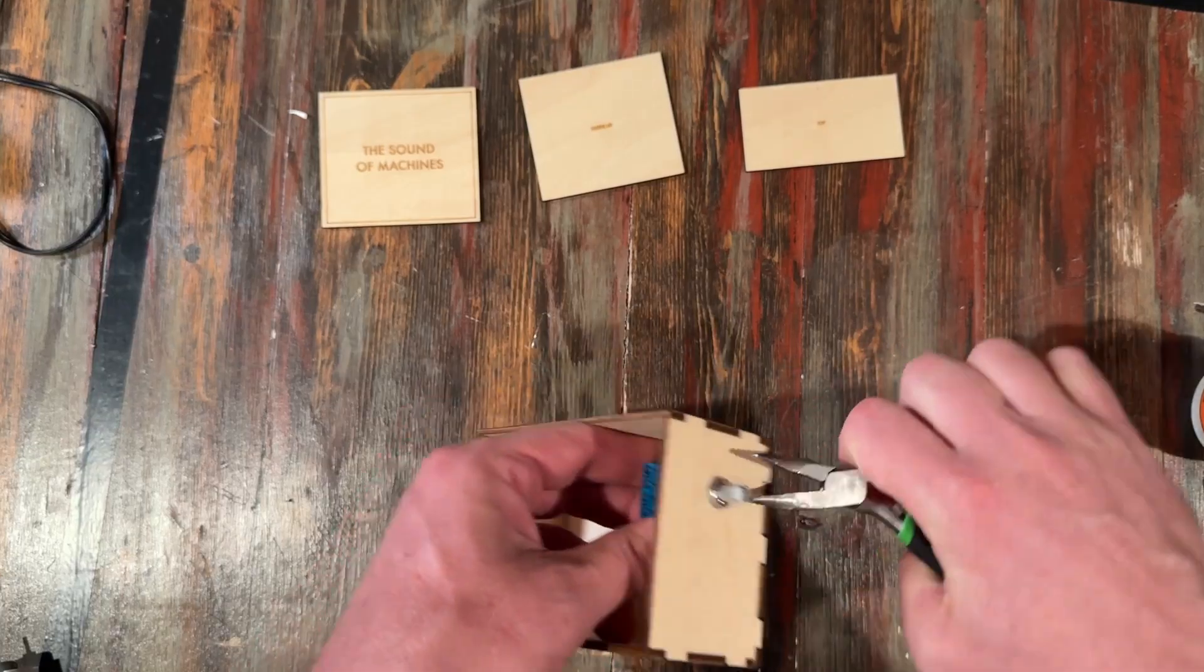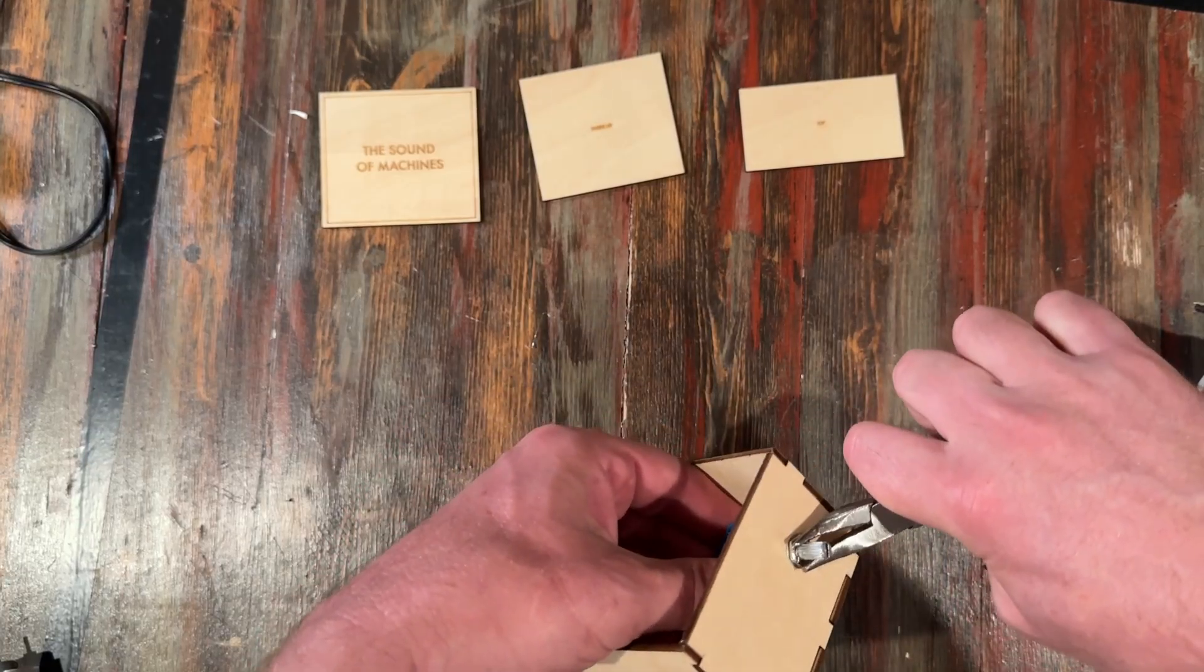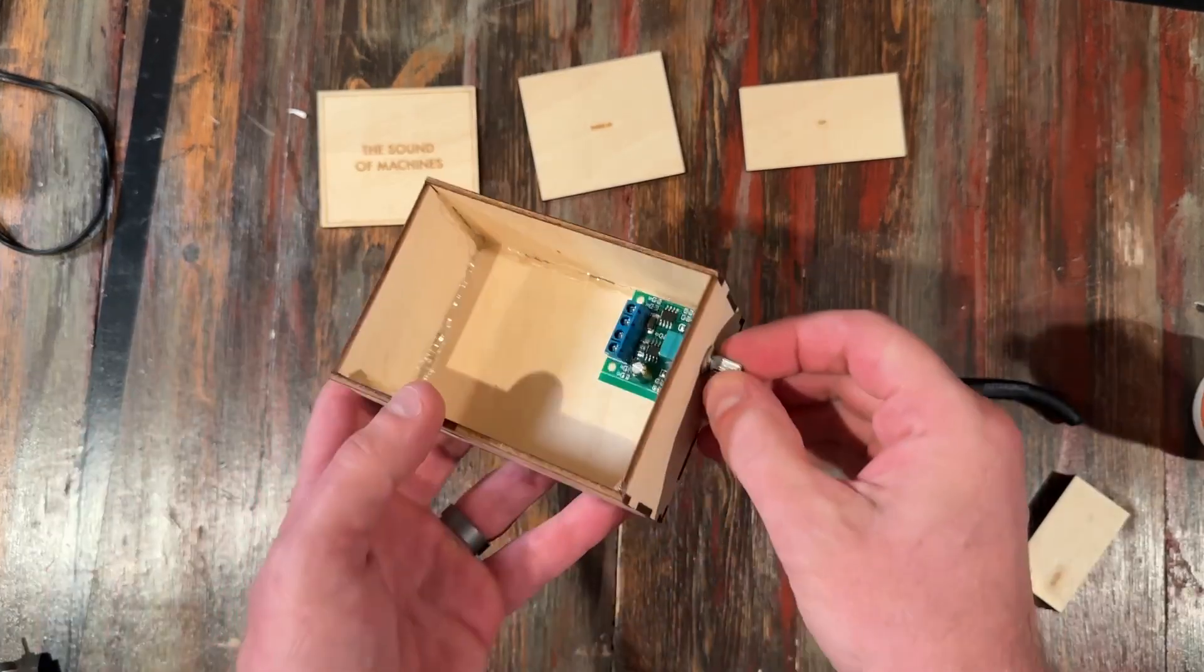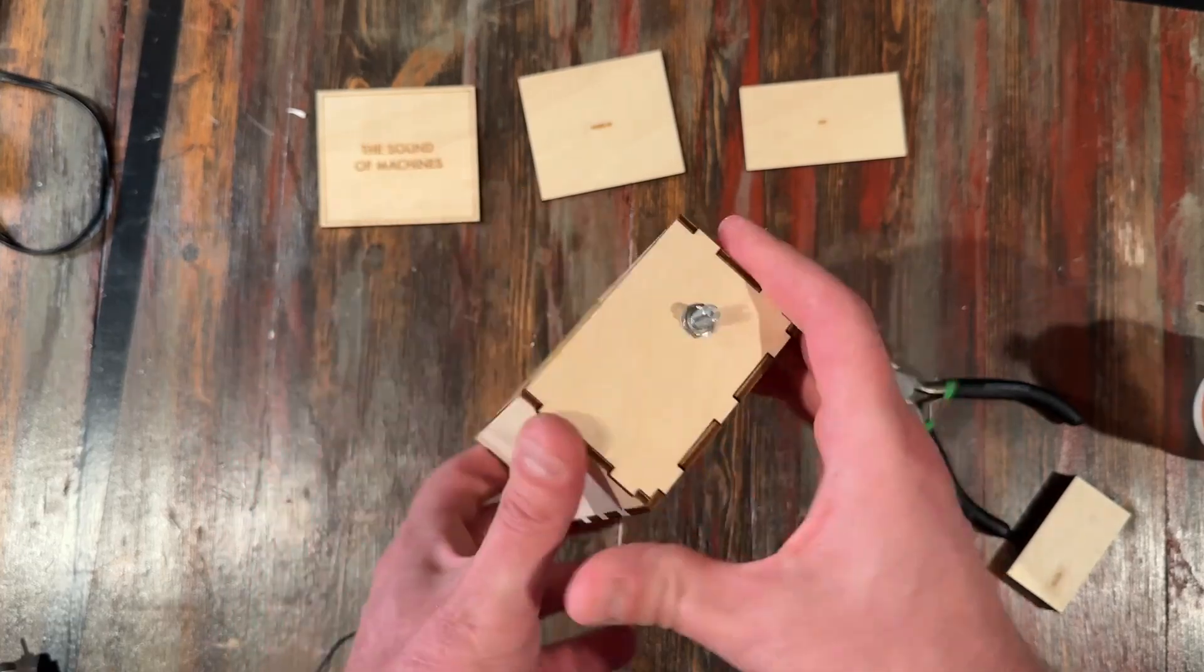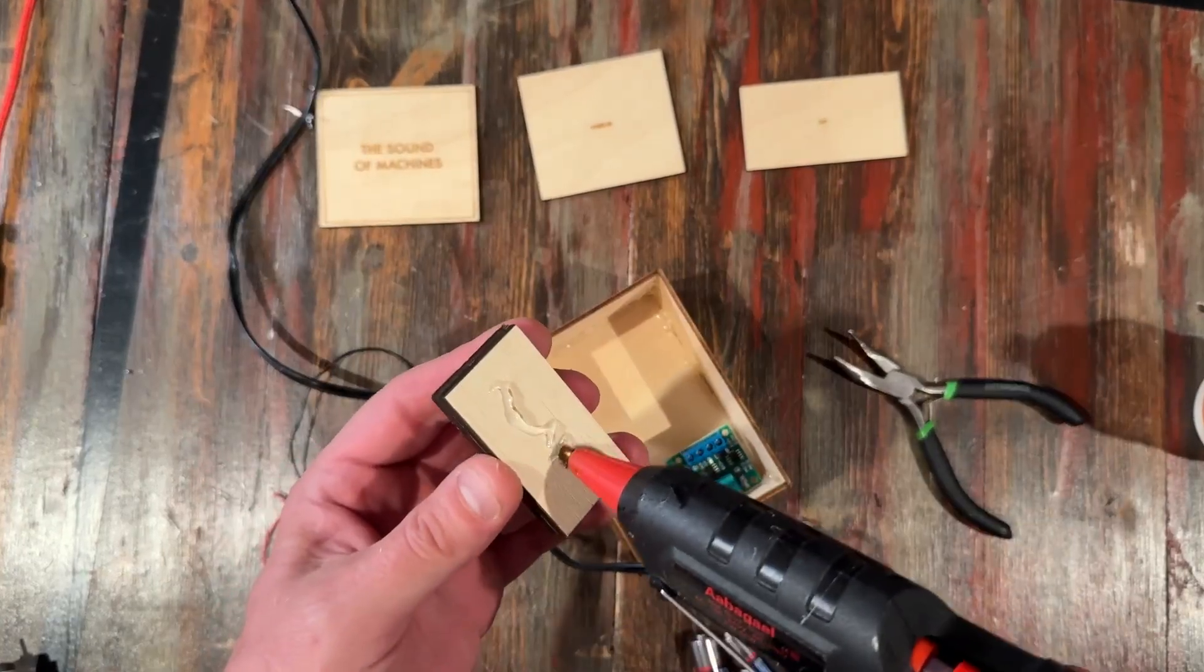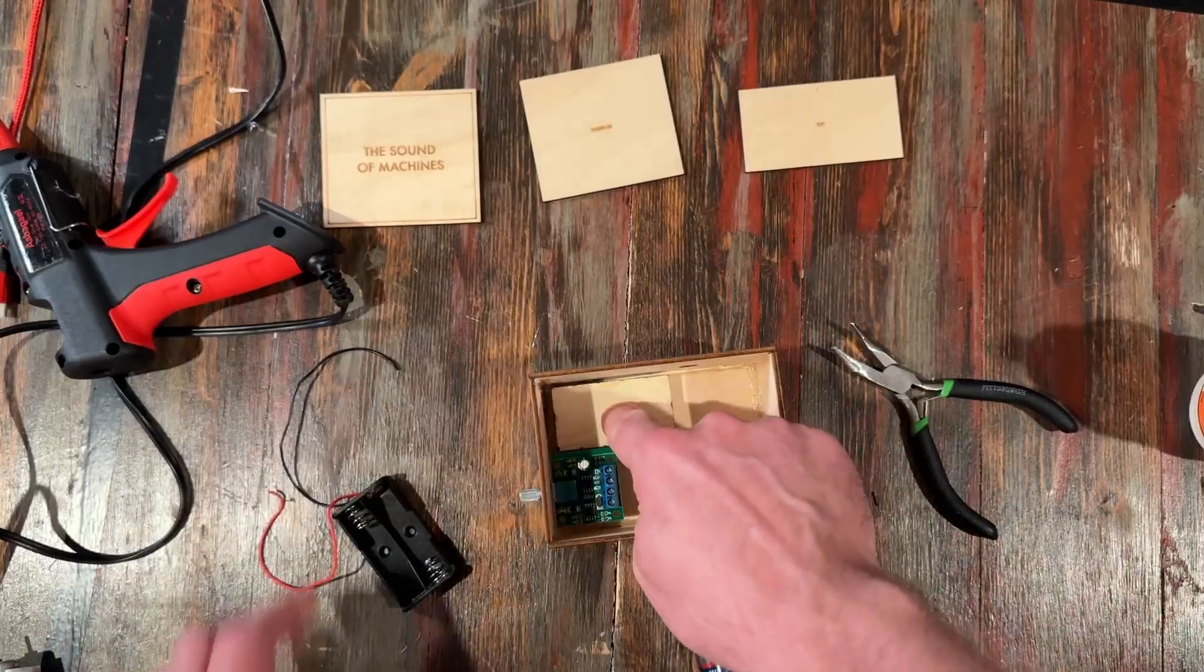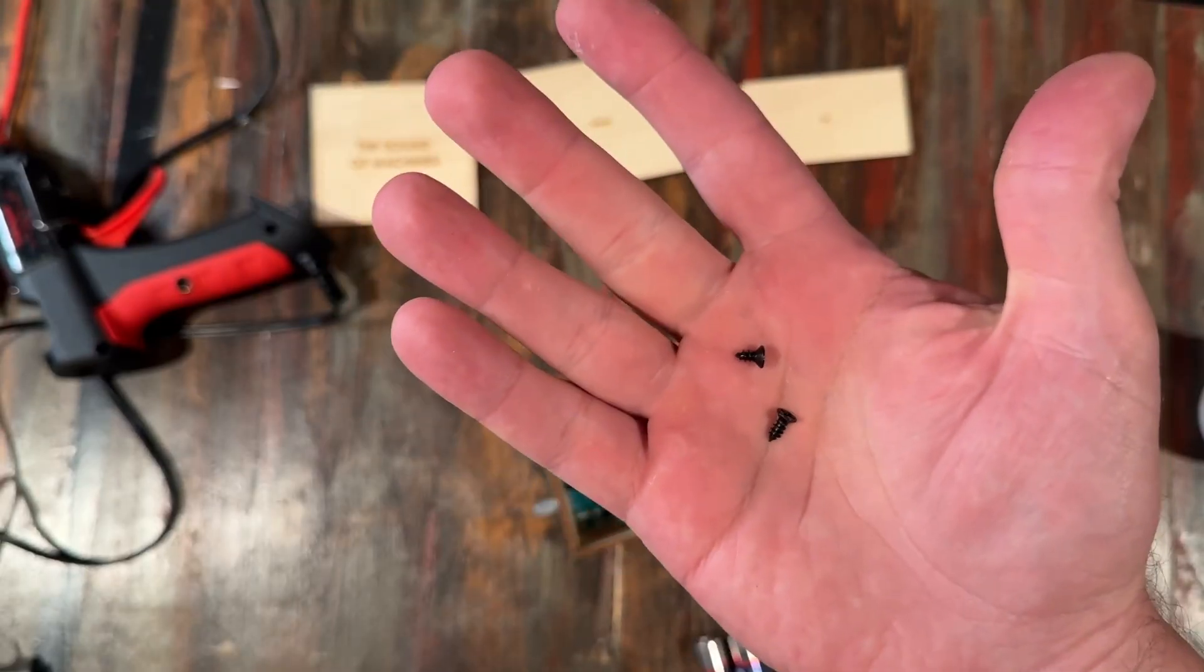Now with everything that you attach here, it's important for it to be fully tightened or glued down, because anything that rattles on the box will be picked up by the contact mic. Now I glued down the wood piece that goes under the battery holder, and I fastened the battery holder onto it using these little screws.